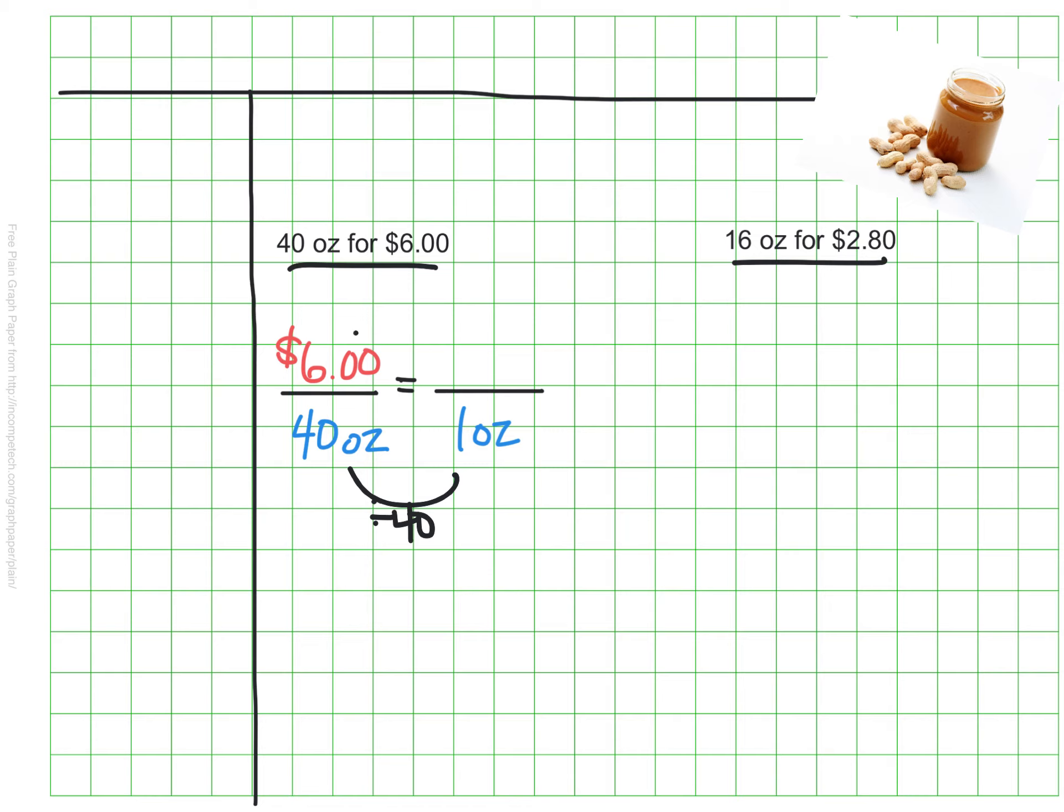I want to take my 40 ounces and divide it down to find just one of them. If I do that, I'll of course have to divide my $6 by 40. From my calculations, I see that it will cost 15 cents to buy one ounce of the peanut butter.